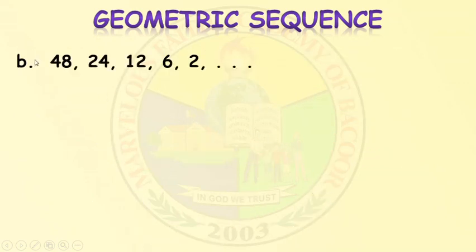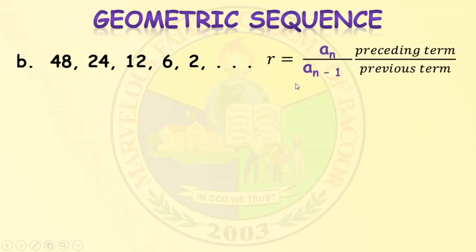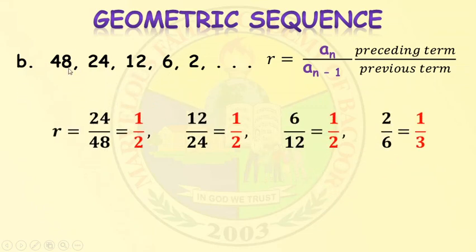For Example B, we have the sequence: 48, 24, 12, 6, and 2. Using the formula — preceding term over previous term — 24 over 48 equals 1/2 or 0.5. Then 12 over 24 equals 1/2 or 0.5. Then 6 over 12 equals 1/2 or 0.5.